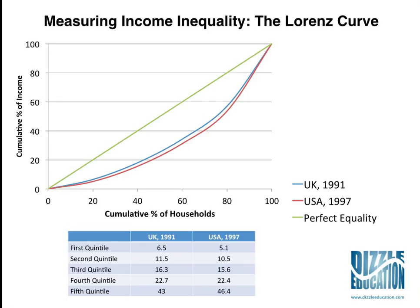You'd plot all those points on your graph, and here we've got a Lorenz curve for the UK in blue and a Lorenz curve for the United States in red. The green line represents perfect equality — if everyone in the country had the same percentage of income. The further away from that green line you are, the more unequal the income distribution in your country is. From this, we can deduce that the United States has a higher rate of income inequality than the UK, although only fairly slightly.